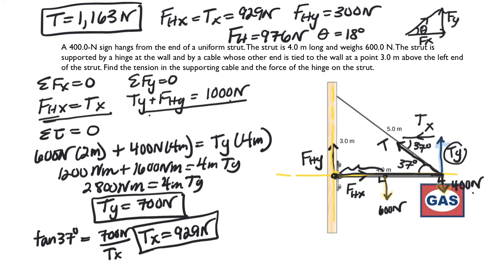So the theta for the hinge force is 18 degrees. And so that's different than 37. And it's just the number that it comes out to be. So the hinge force is, I should write that total force is 976 at 18 degrees. Okay, and that's the hanging sign problem.